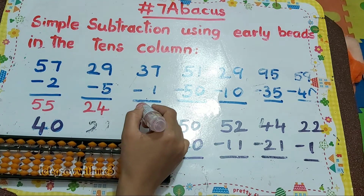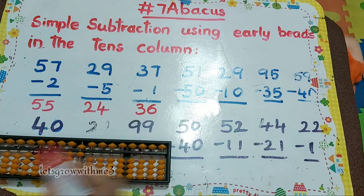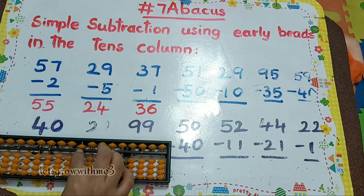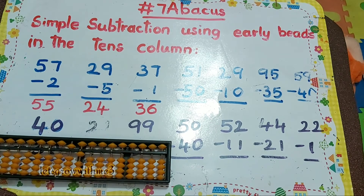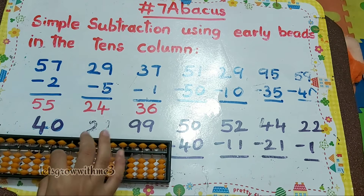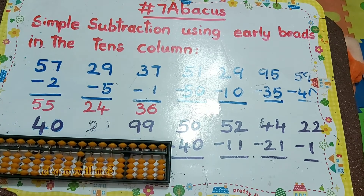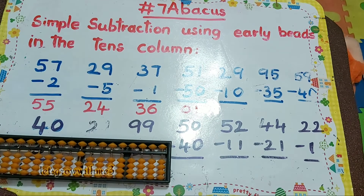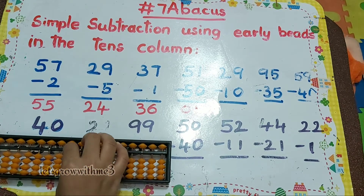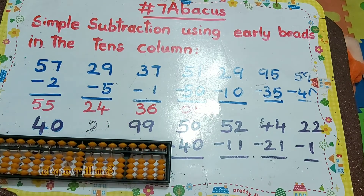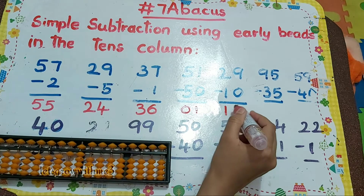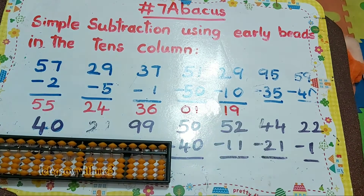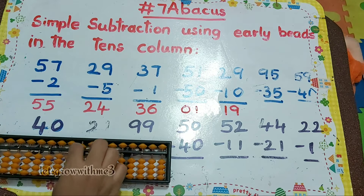So the answer is 36. Next one: 51 minus 50, so the answer is 01. Next one: 29 minus 10, so the answer is 19. Next one.